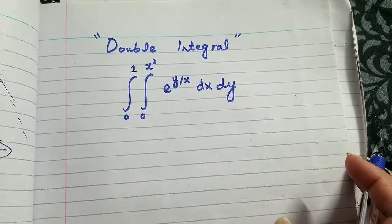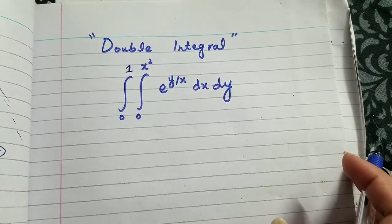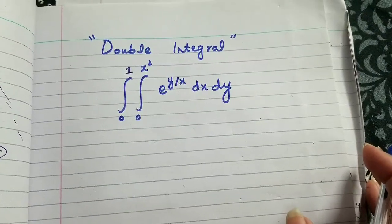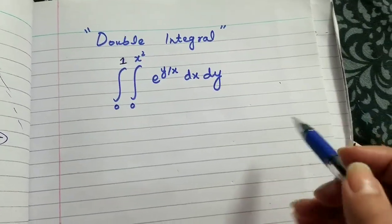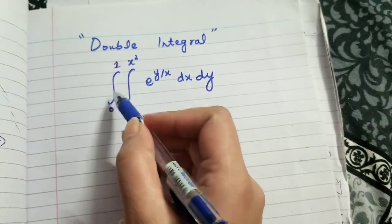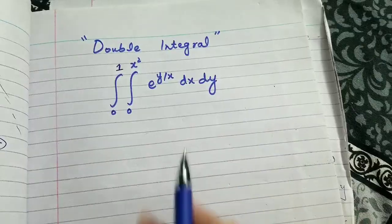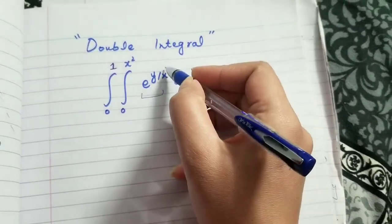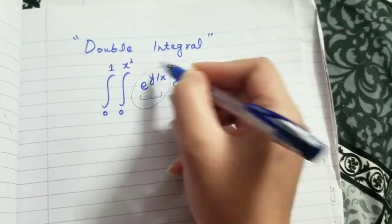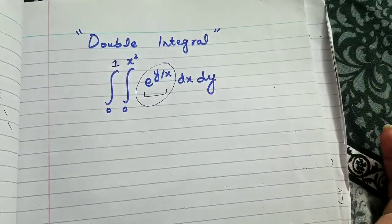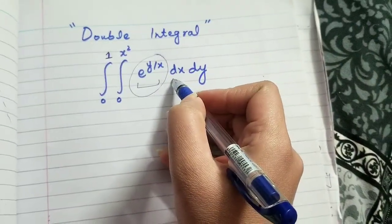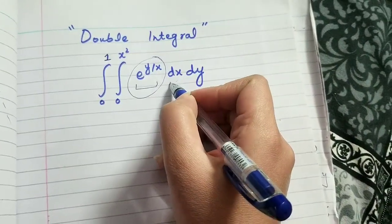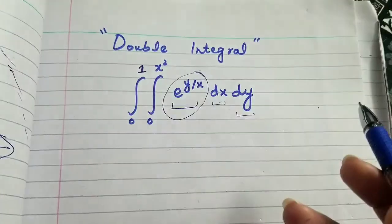Hello everyone, I hope you are learning well. In this video we are going to solve a double integral — as we can see, there are two integrations to perform on this integrand. The term that we are integrating is called the integrand, and it is integrated over x and y variables.